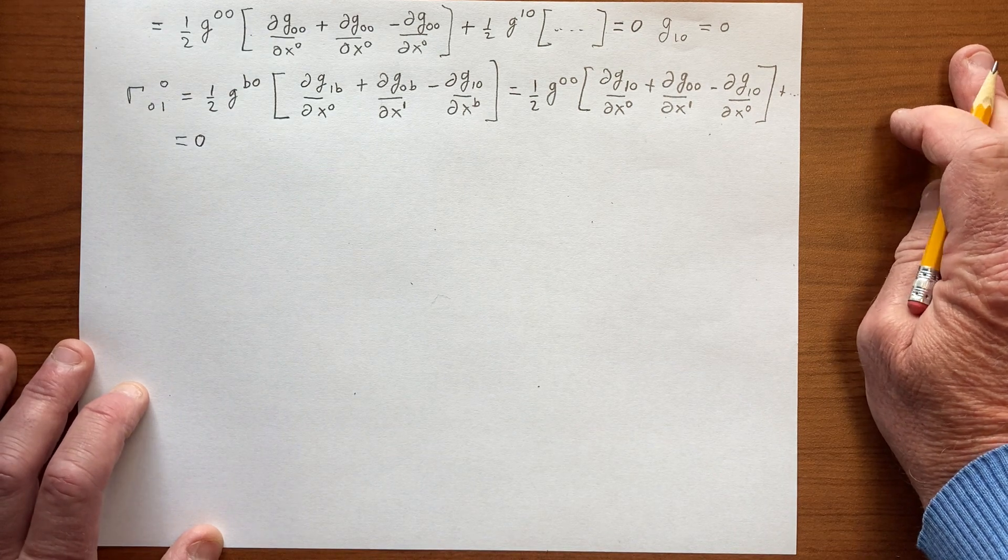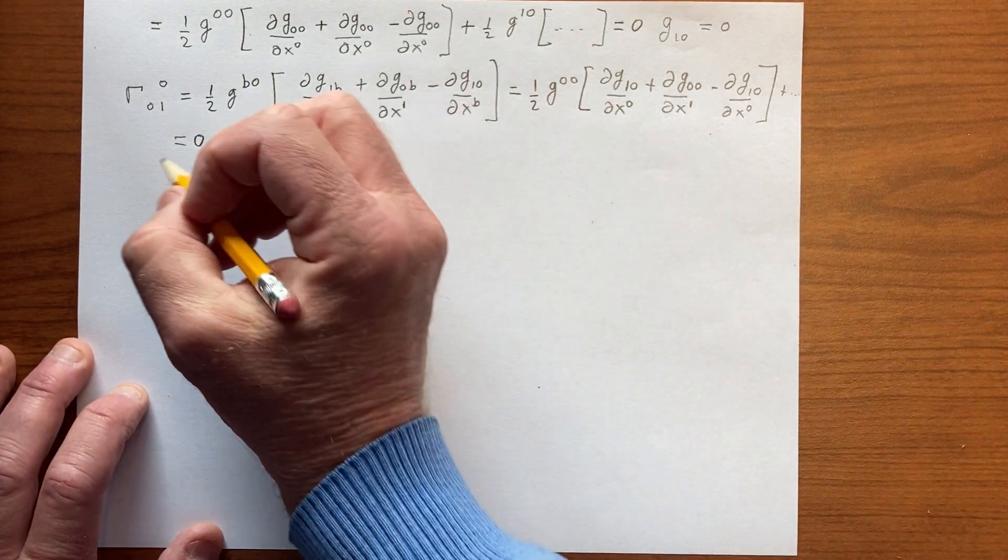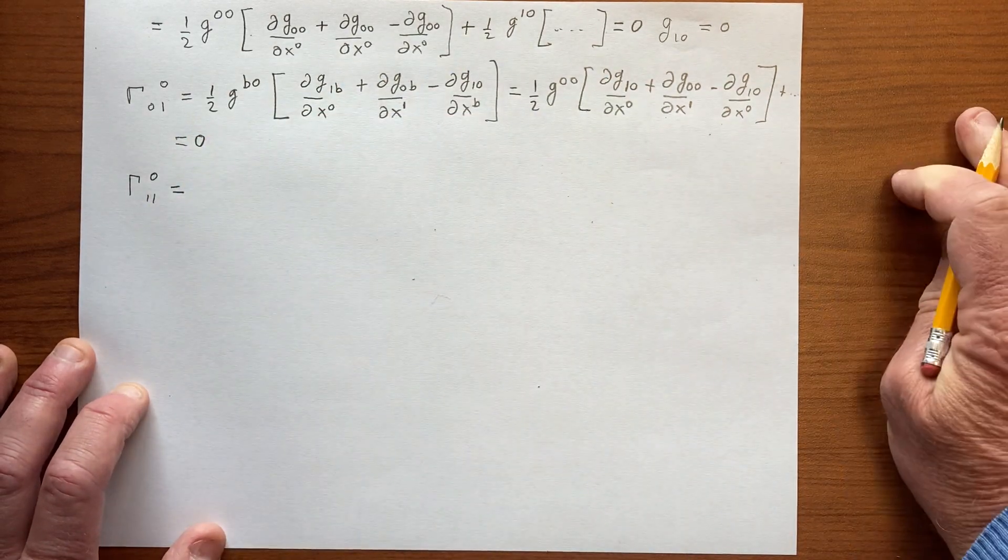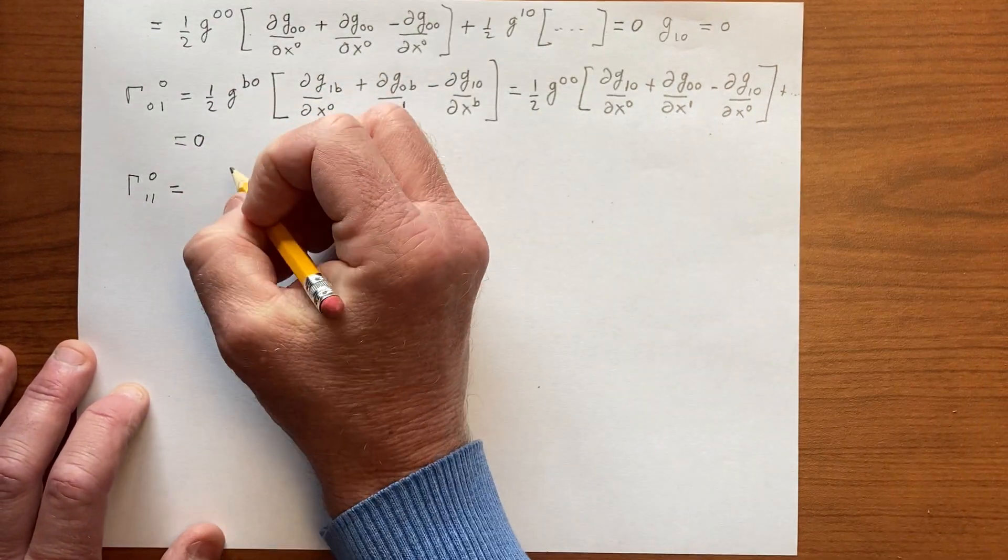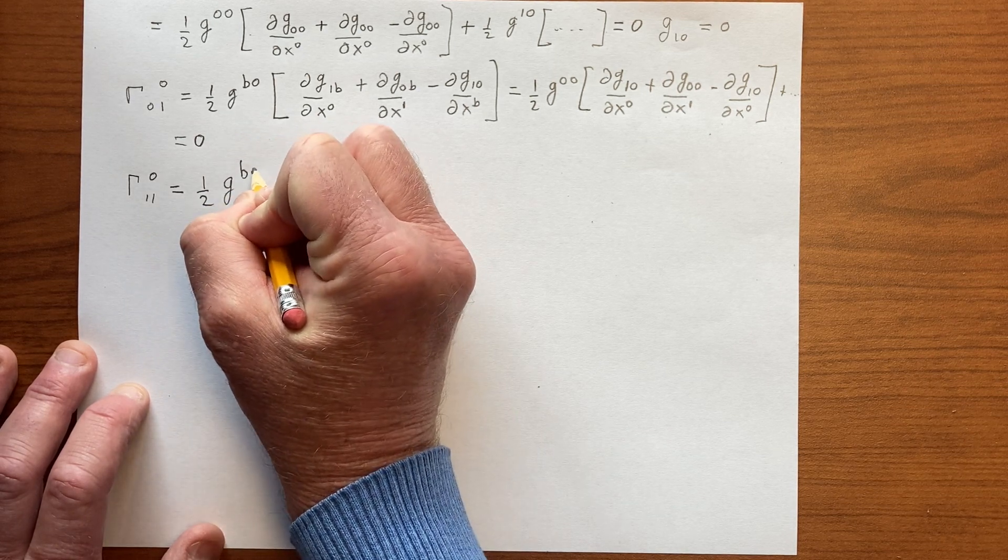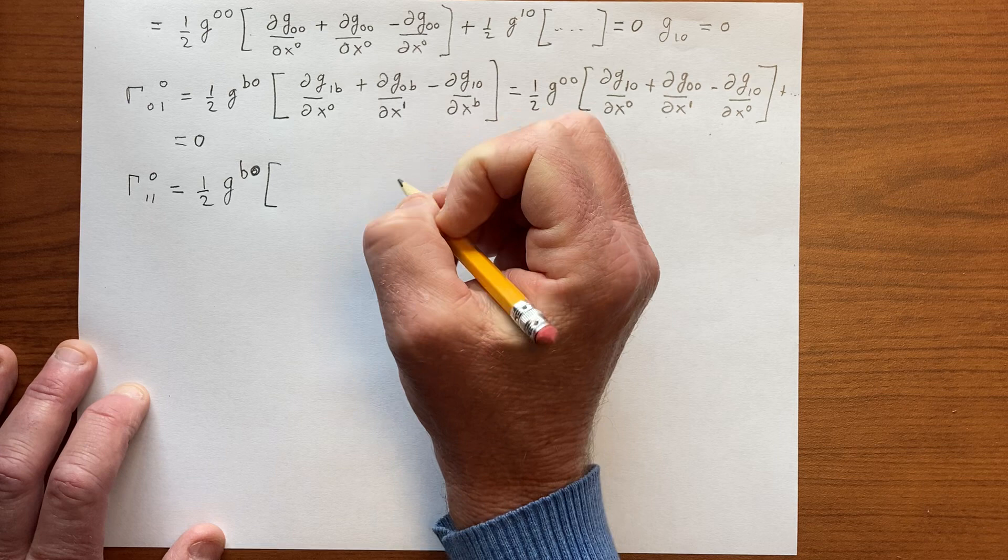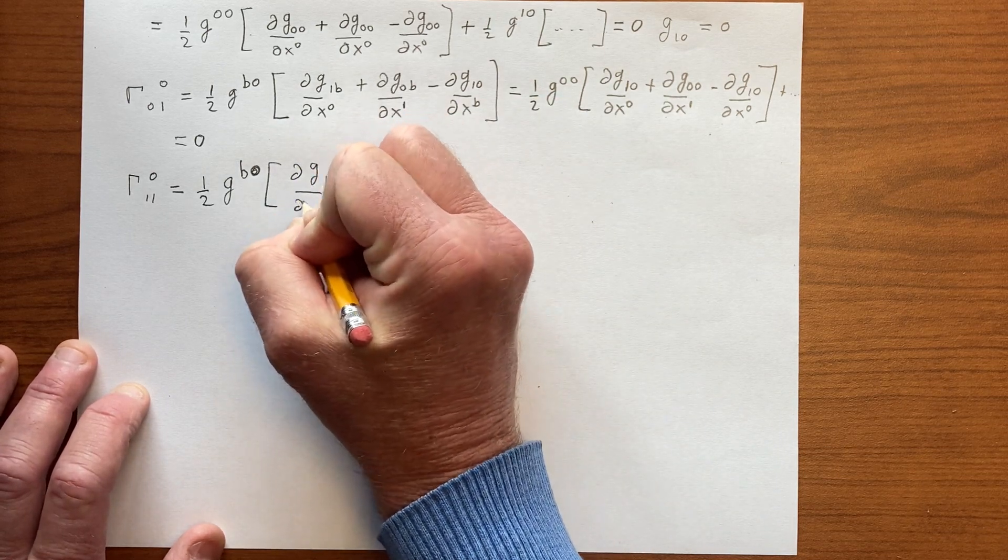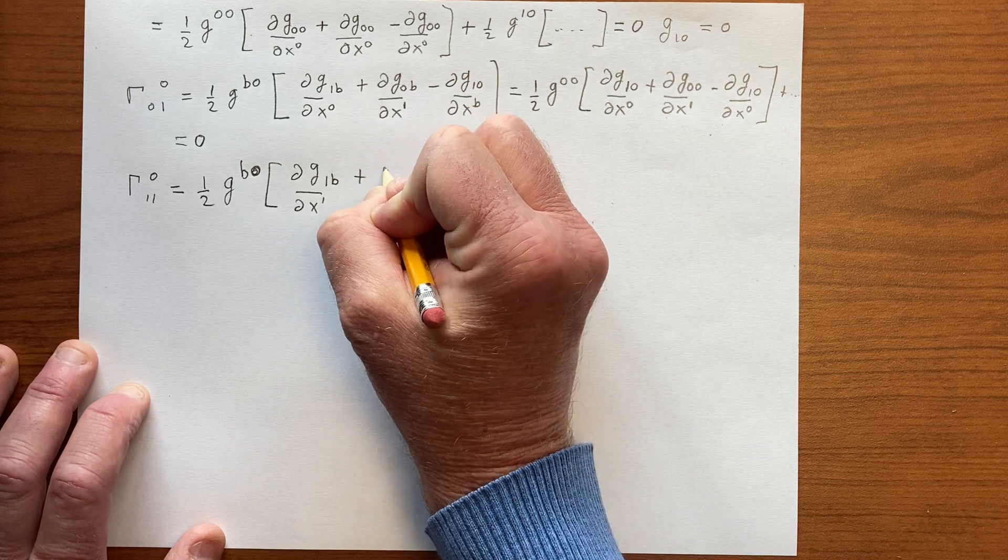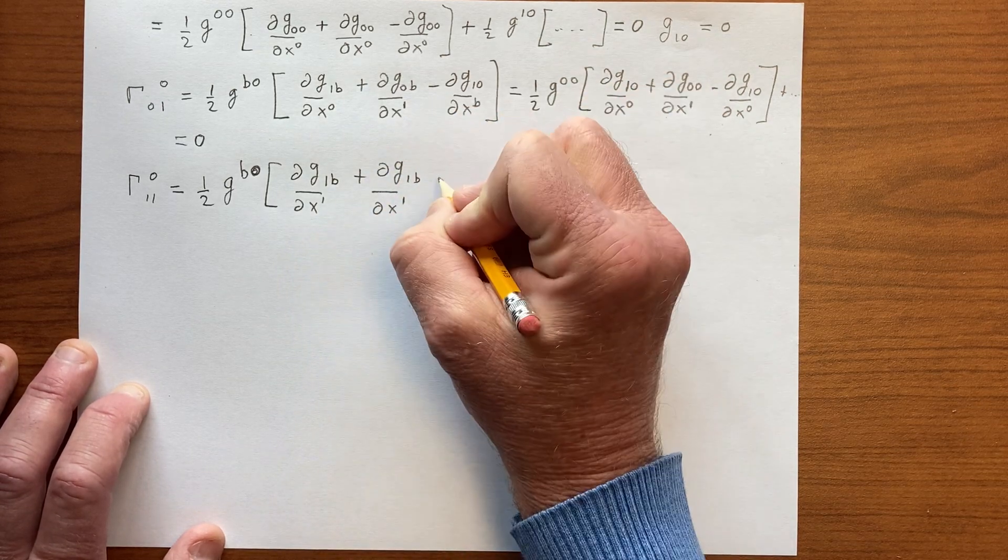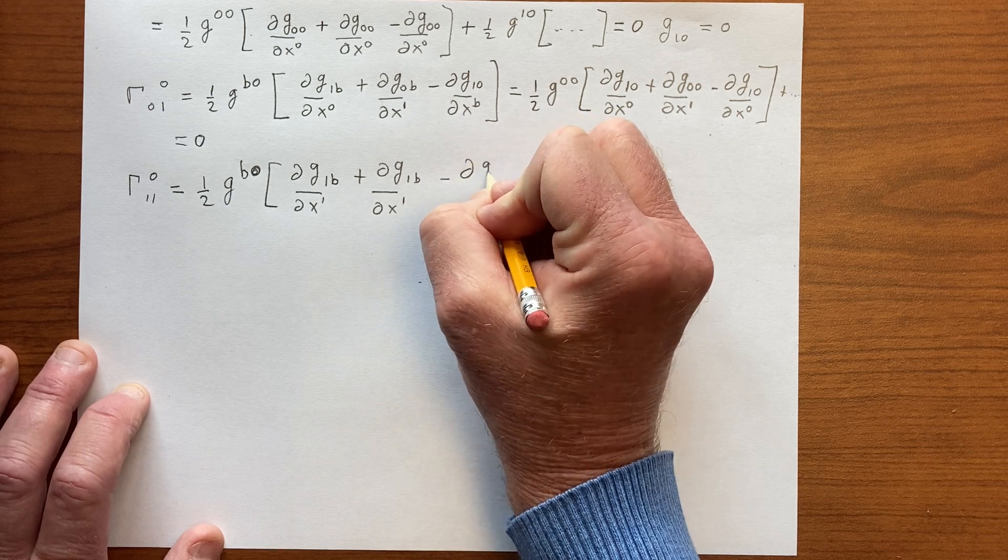And so the last connection term, Γ^0_11, this will turn out to be non-0. So we get ½g^b0 ∂g_1b/∂x^1 plus ∂g_1b/∂x^1 minus ∂g_11/∂x^b.